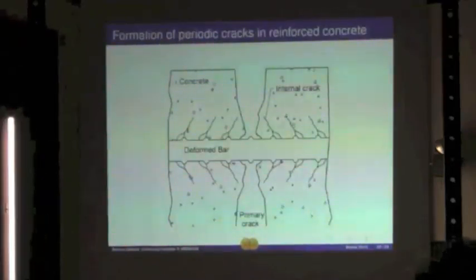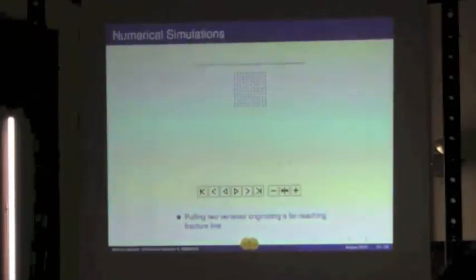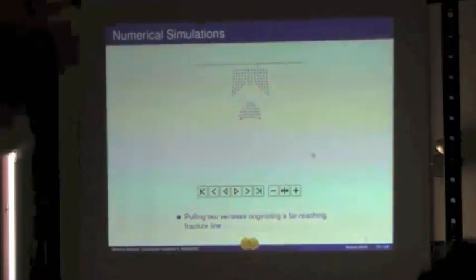Then this is just a simple example of periodic cracks that occur in this case in reinforced concrete, and we tried in a way to recover this behavior. But we didn't manage to do that with a first gradient interaction, because this is the results we get trying to do this.